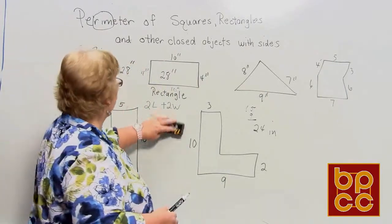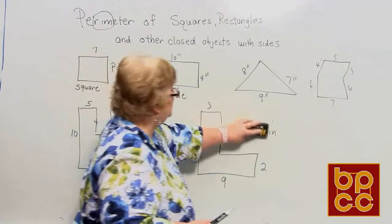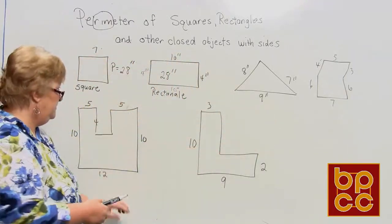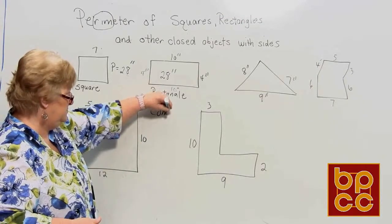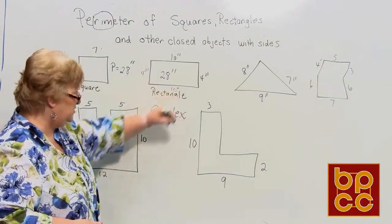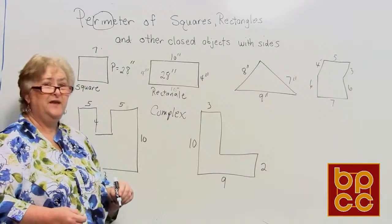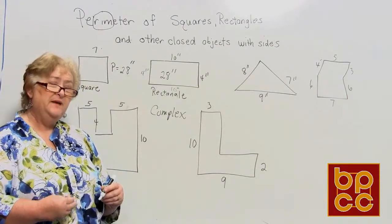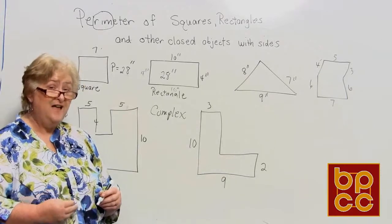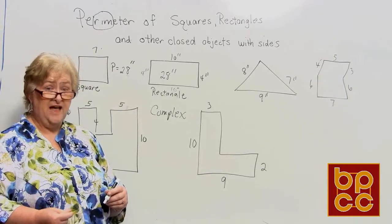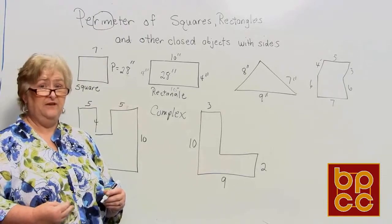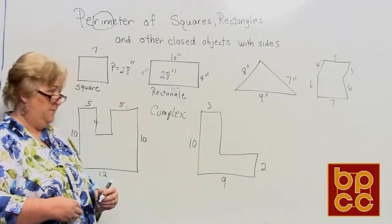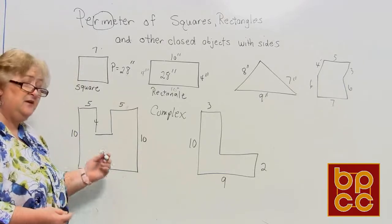Now let's talk about complex perimeter. What has happened is we've been given an object with enough information to find the full perimeter, but some sides have been left off. We have to use the information given to find the missing sides, then we can add everything up.